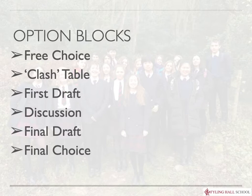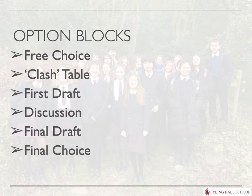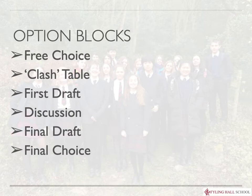The process starts off with a free choice — I would like to know which four subjects you would like to study for GCSE, and alongside those four I would also like to know one other subject you would be happy to study if you were unable to get one of your four initial choices. Once I have your choices, I set up what is called a clash table, in which I put everybody's choices and look at which subjects and combinations are the most popular. We'll look at an example of a clash table in the next slide, which will highlight some of the issues that can arise.